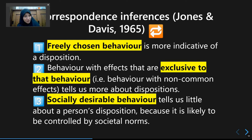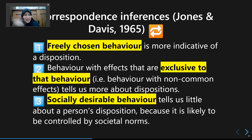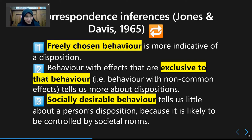The third principle is that socially desirable behavior tells you very little about a person's disposition. For example, if a student wears suits and tie to a wedding reception, that's socially desirable — society expects you to be well dressed there. So it's very hard to make inferences in that case. But when behavior is not socially desirable, it tells you more about the actor's traits or personality.